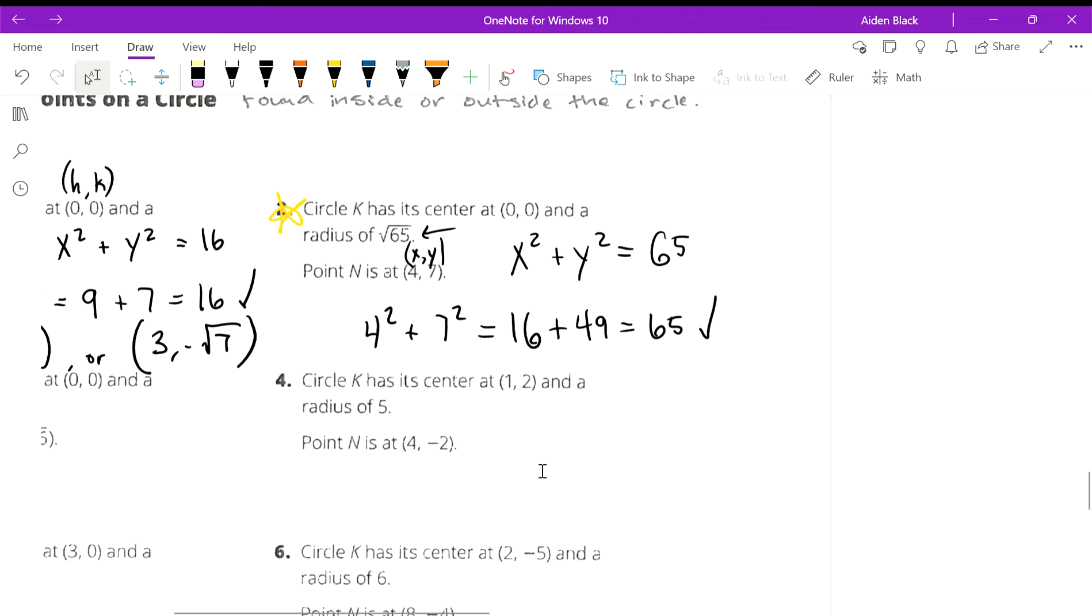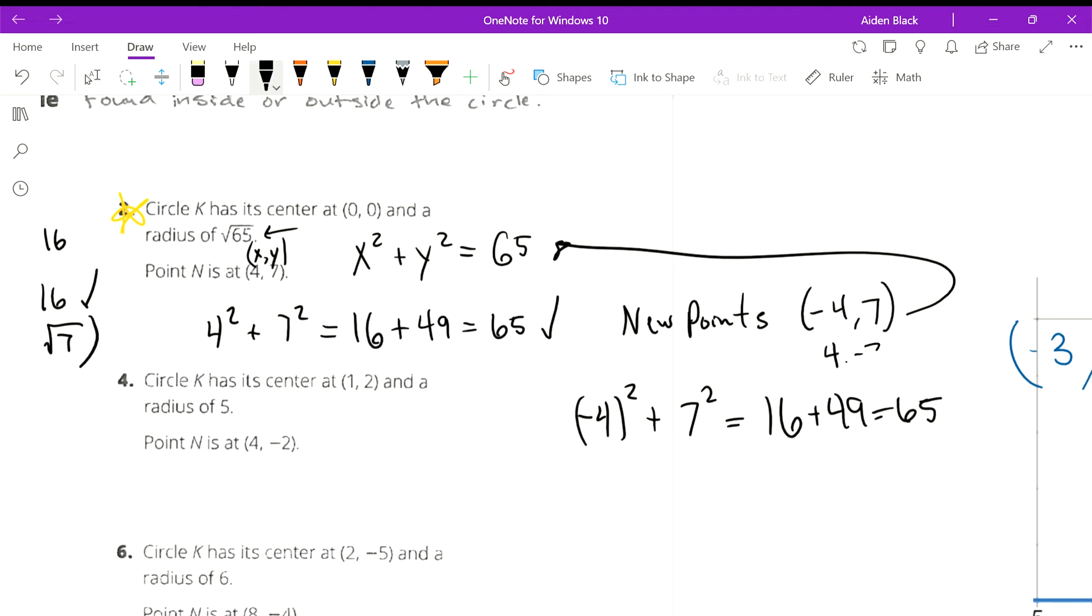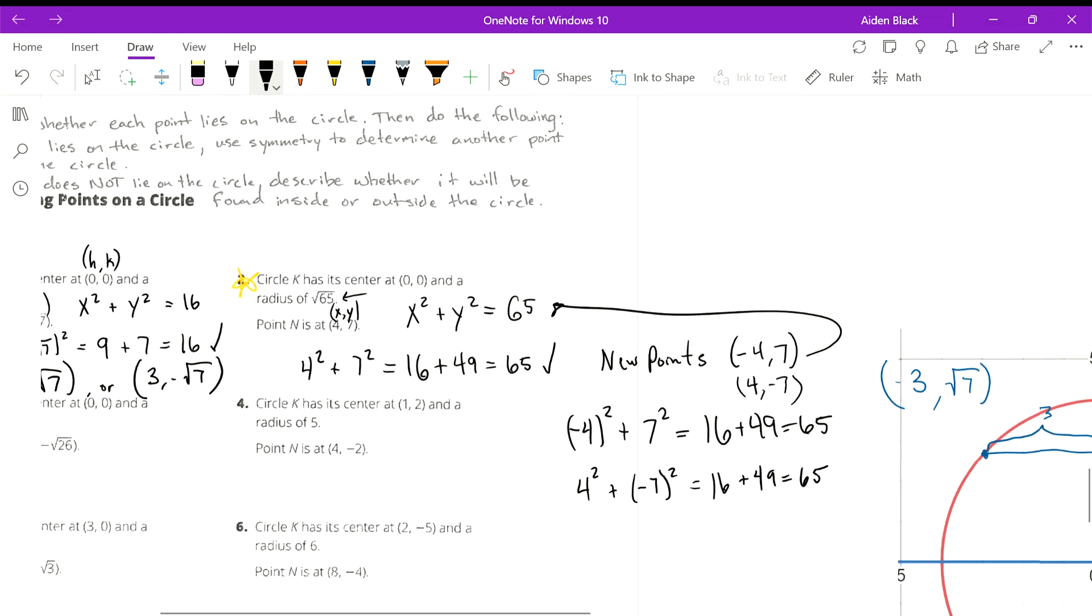And the idea here is you can check your work by plugging in those values. So we said one of the new points was negative 4 comma 7. So if we plug that in to our equation, we get negative 4 squared plus 7 squared, which equals 16 plus 49, which is also 65. Right? The same thing would be true if you plugged in positive 4, negative 7. 4 squared plus negative 7 squared. The same thing happens. So there you are. Those points will work.